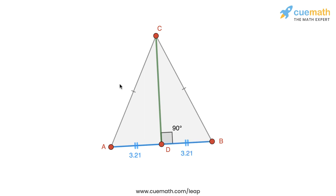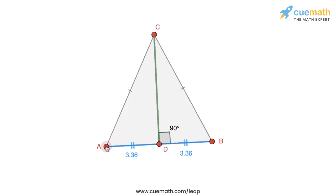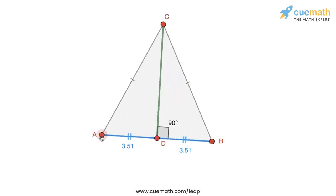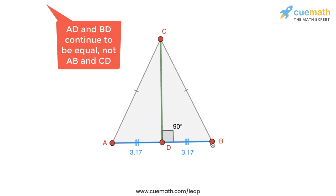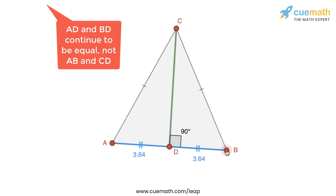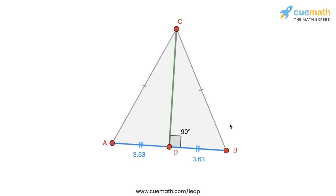And in fact, if I move around the vertices of the triangle ABC, we can see that this continues to be the case. AD and BD continue to be equal. So the altitude drawn from C to the opposite side AB is also the median from C.